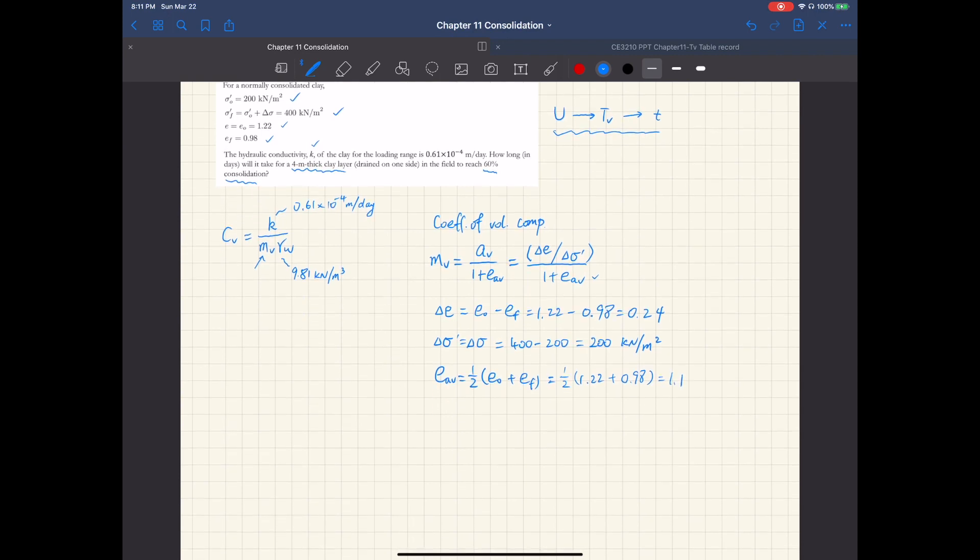And if you substitute these values into the coefficient of volume compressibility equation, you end up with M sub V of 0.00057, and the unit is meter squared per kilonewton.